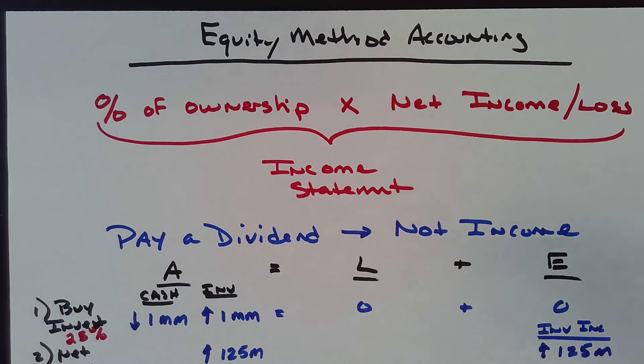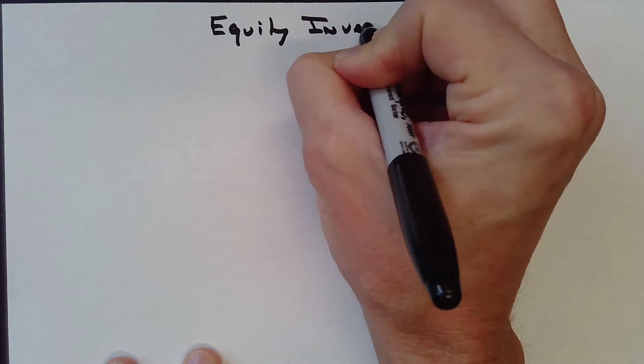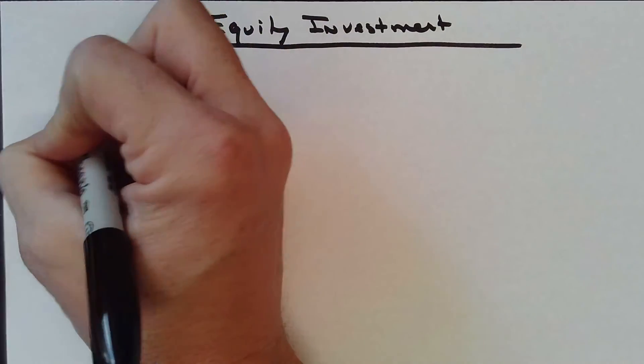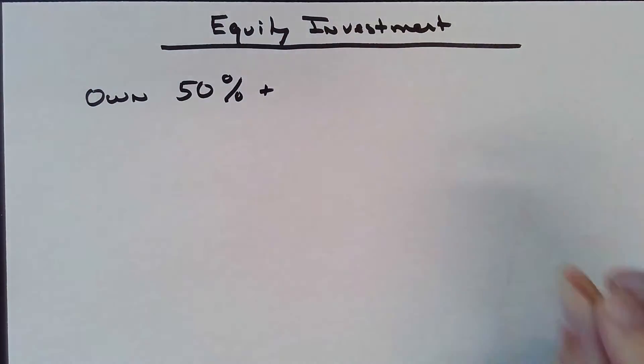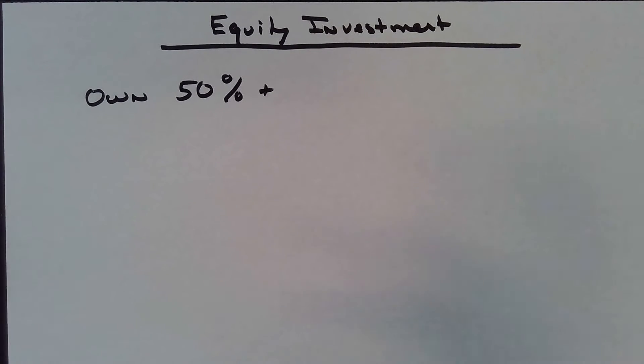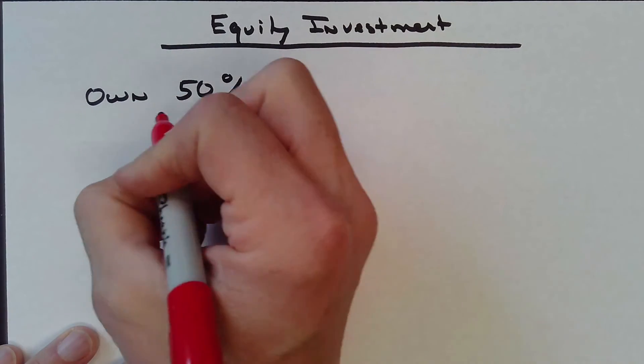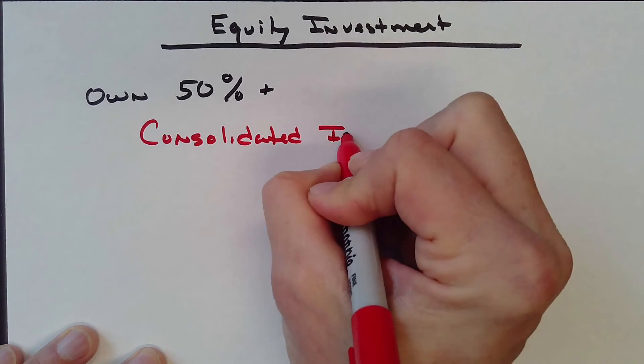If you own greater than 50 percent of an equity investment, this now has to be consolidated in your financial statements.